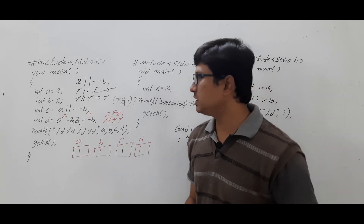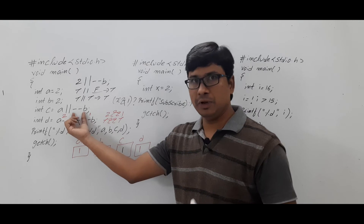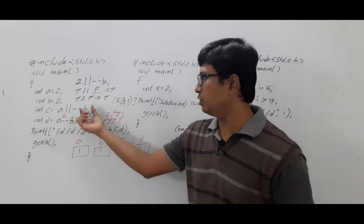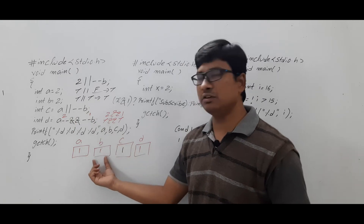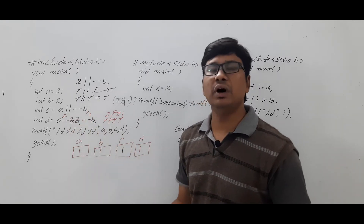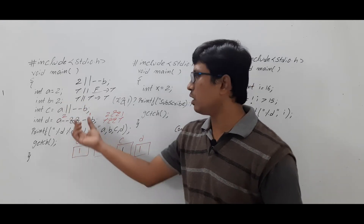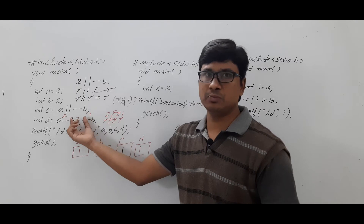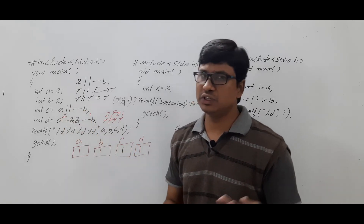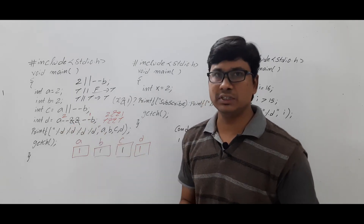Many students make the mistake of also performing --b (the pre-decrement) even in the logical OR expression, which gives them a different value for b. You should not do --b when evaluating the logical OR expression because of short-circuit evaluation. If you still have any doubts related to this program, feel free to ask me in the comment section.